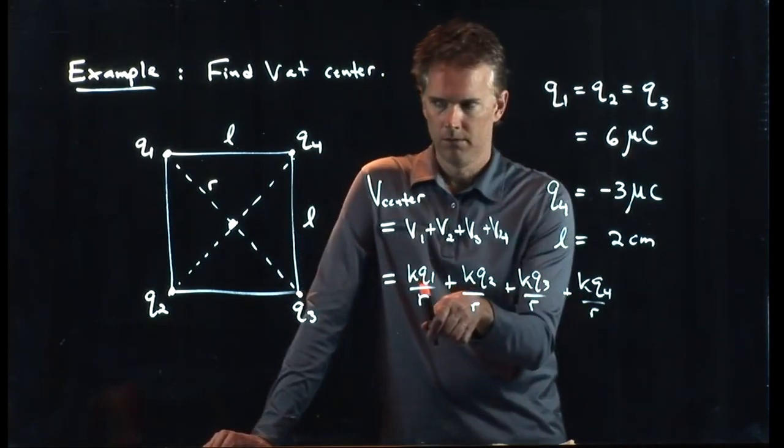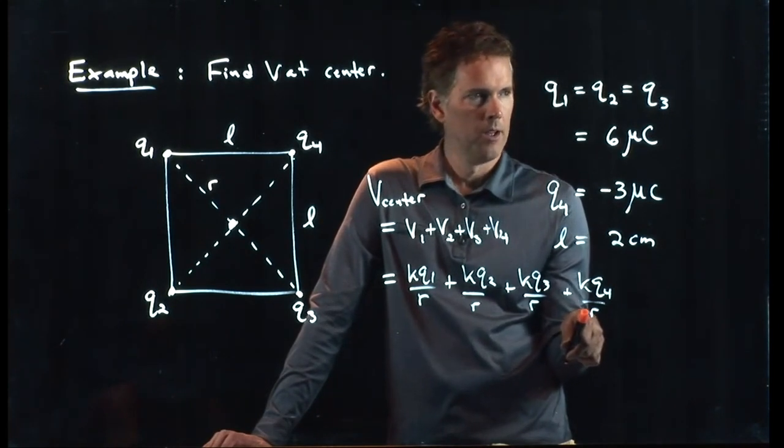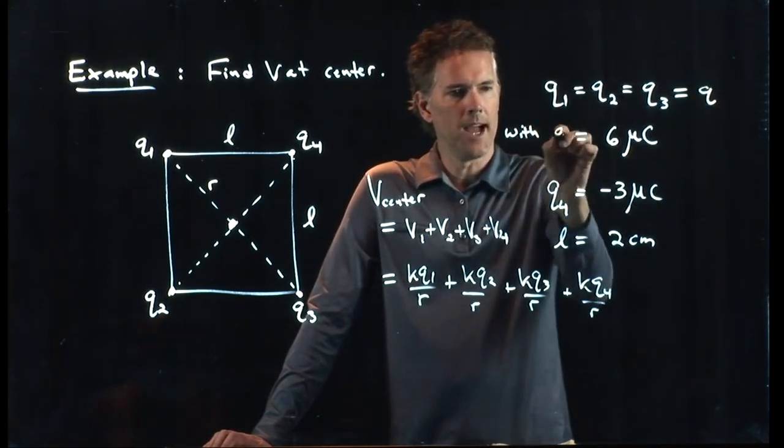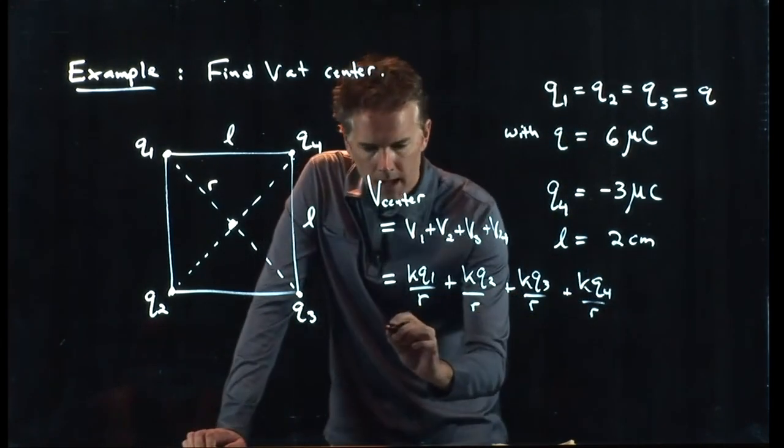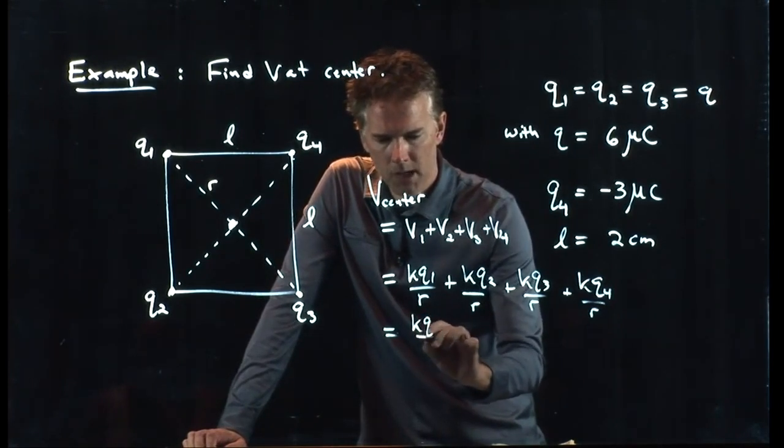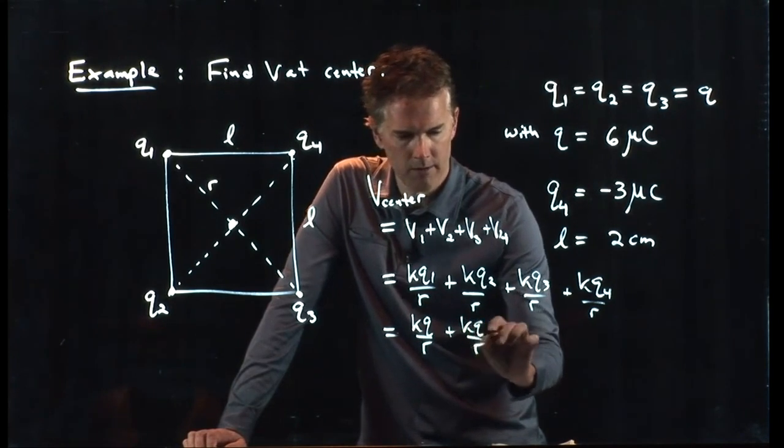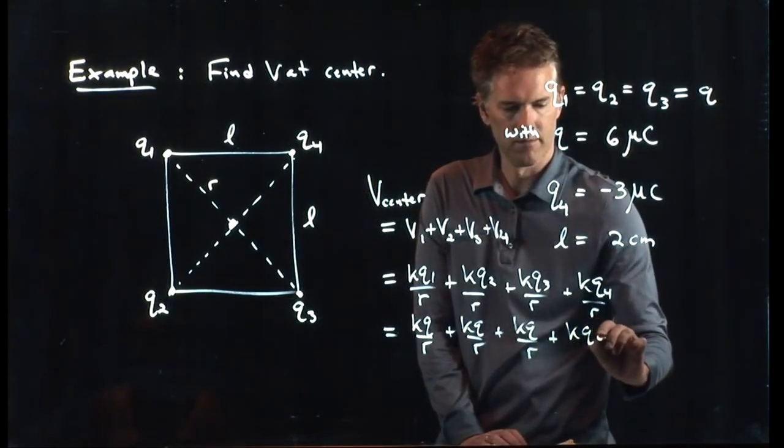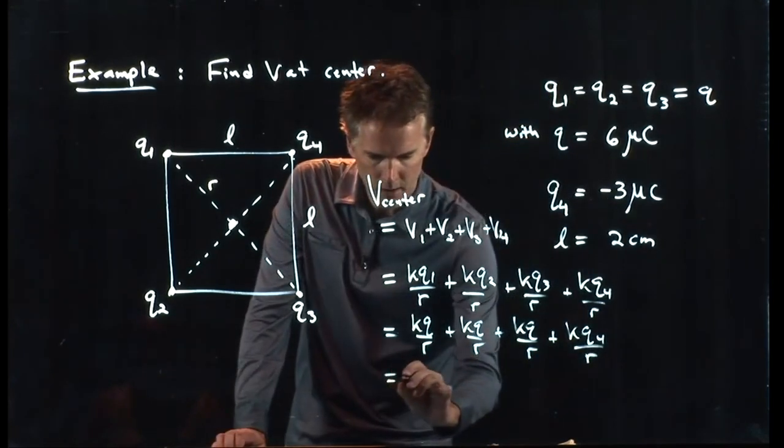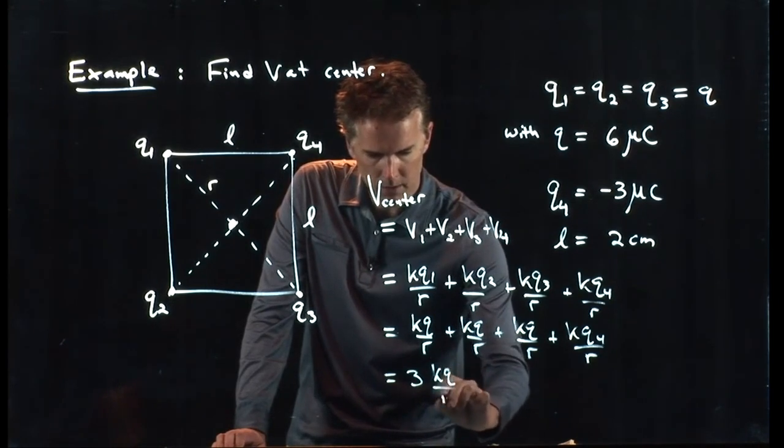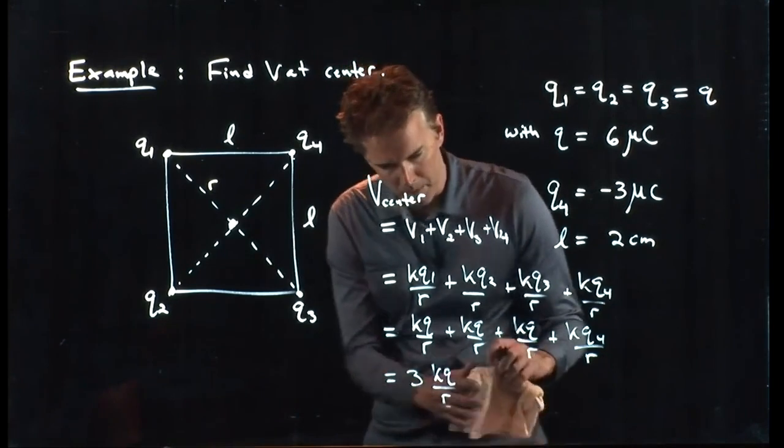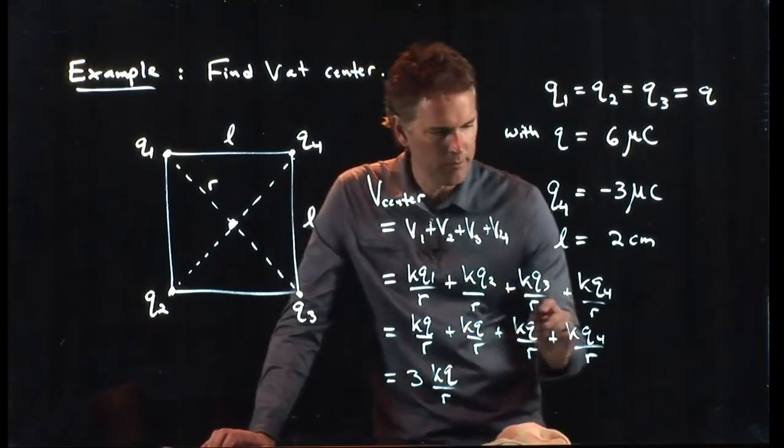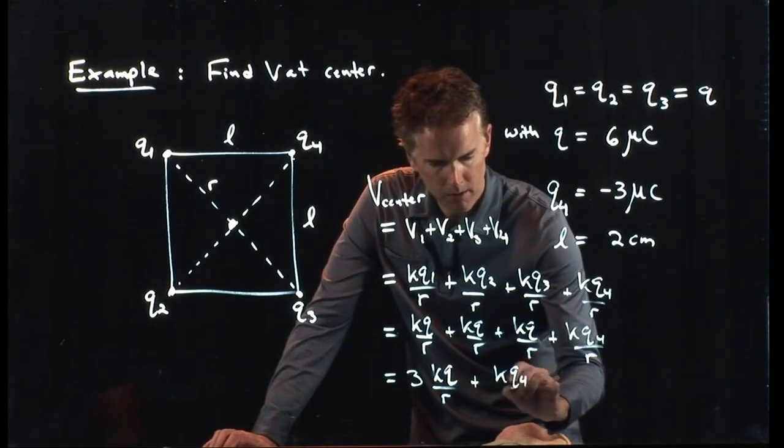We know all the Qs. We can probably figure out what the Rs are. But we can also call this thing just Q, and we'll say that Q is equal to 6 microcoulombs. Therefore, we can simplify this quite a bit. This first one just becomes KQ over R, and then we have KQ over R, and a third. The fourth one is the only one that's different. So this whole thing becomes 3KQ over R. We can even simplify this a little bit more: 3KQ over R plus KQ4 over R.